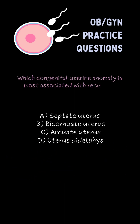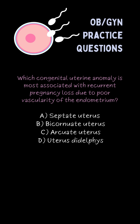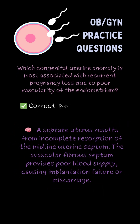Which congenital uterine anomaly is most associated with recurrent pregnancy loss due to poor vascularity of the endometrium? A. A septate uterus.